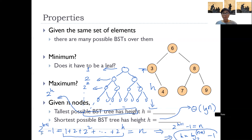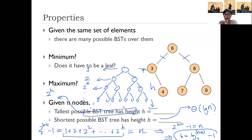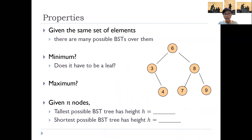A binary search tree on n nodes cannot have a height asymptotically shorter than log n. This is because the fan-out is only two, limiting how wide the tree can be. The important takeaway is that for a binary search tree with n nodes, the tallest height could be n, while the shortest possible height is logarithmic — log n.